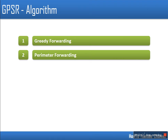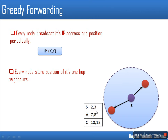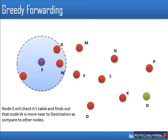GPSR routing protocol uses two forwarding modes: the first one is greedy forwarding and the other is perimeter forwarding. In GPSR, every node shares its location with its neighbors. So let's say S is a node with two neighbors. S will send a packet containing its IP address as part of its identity and the location of node S. When a node receives such a packet, it puts this entry in its table, storing S's location in terms of x and y coordinates.